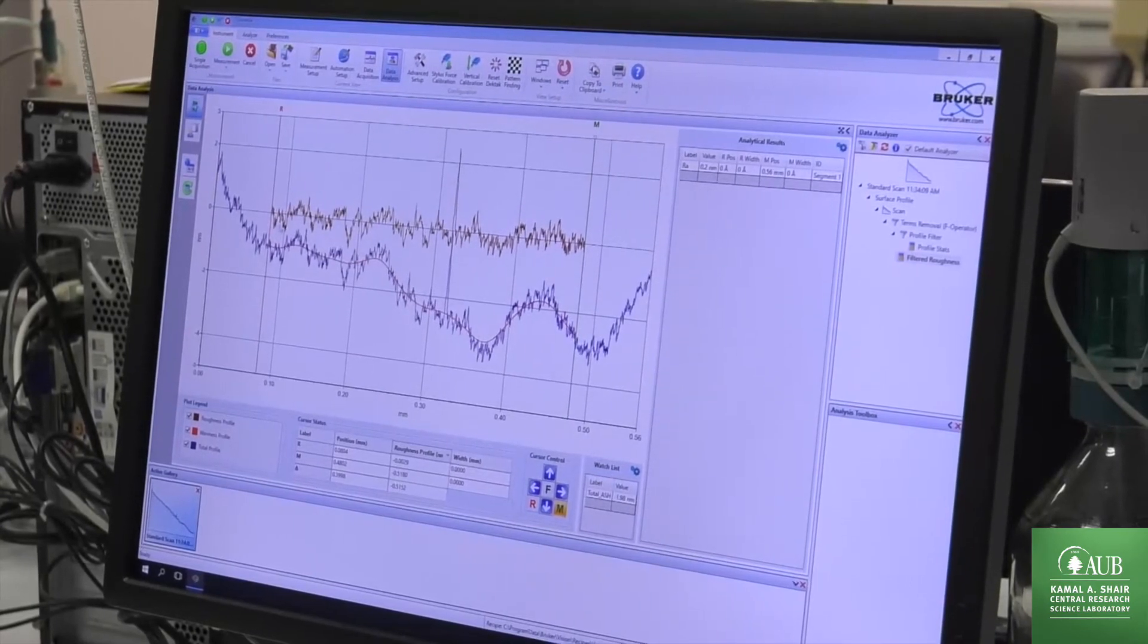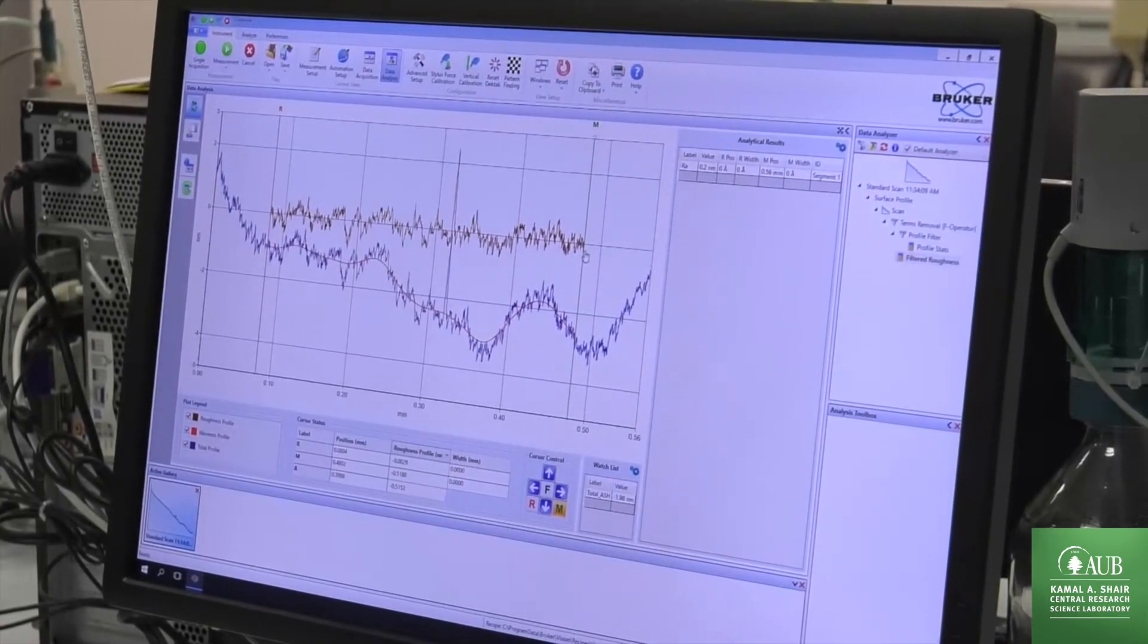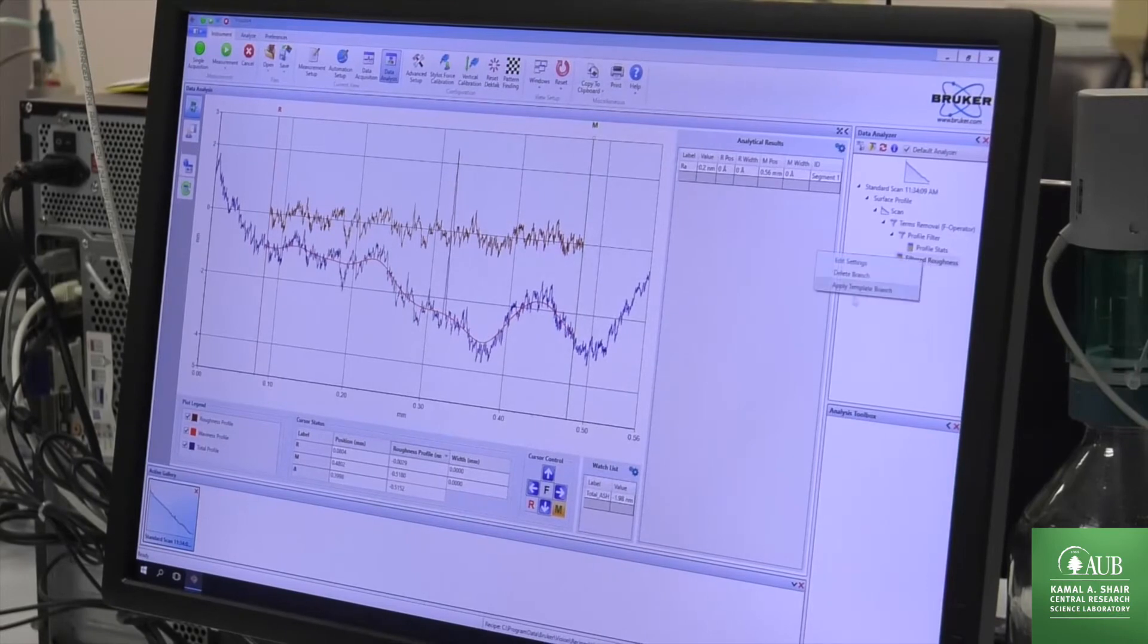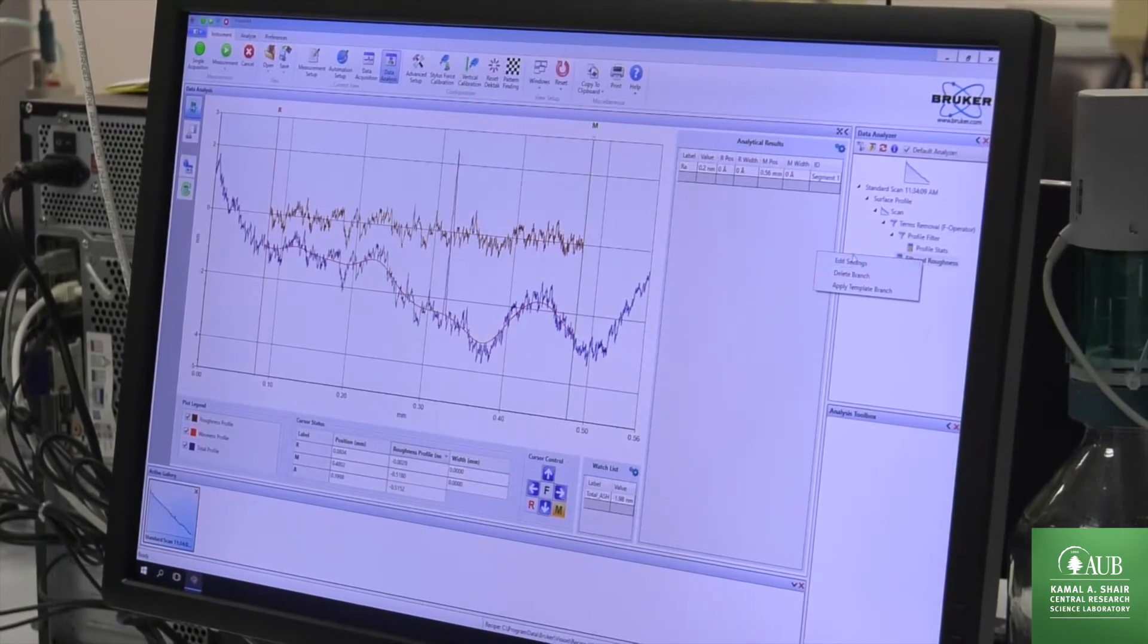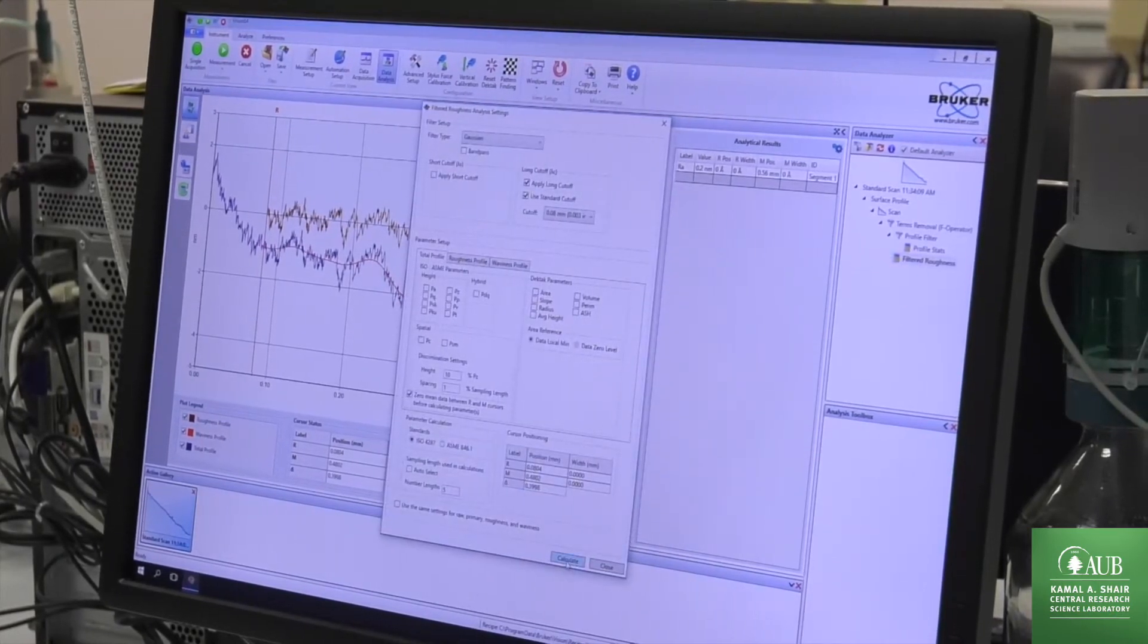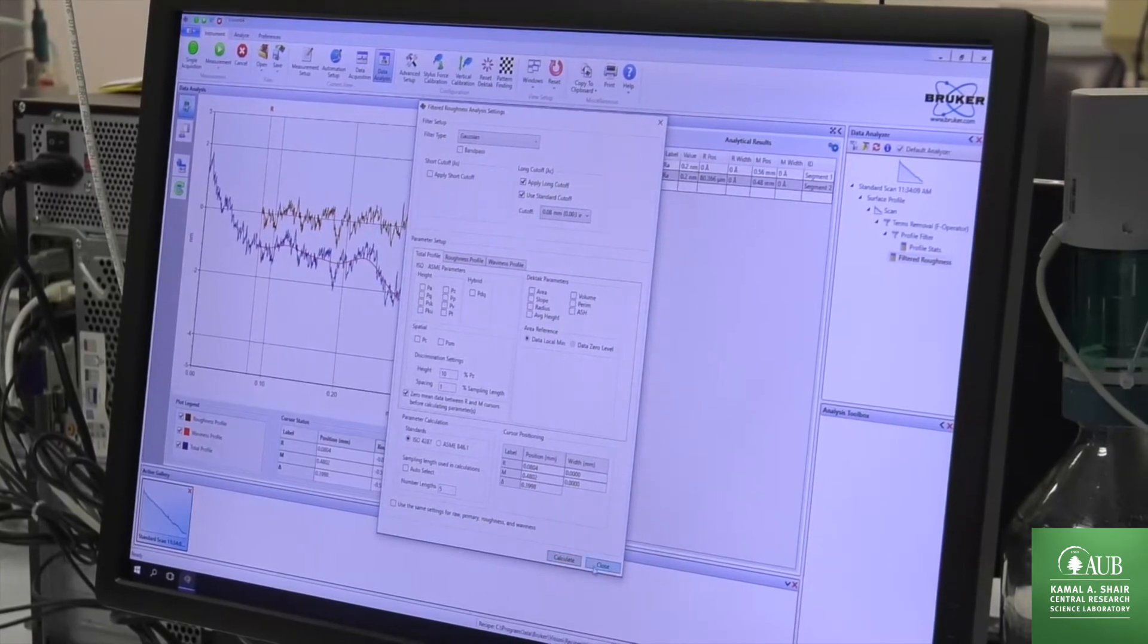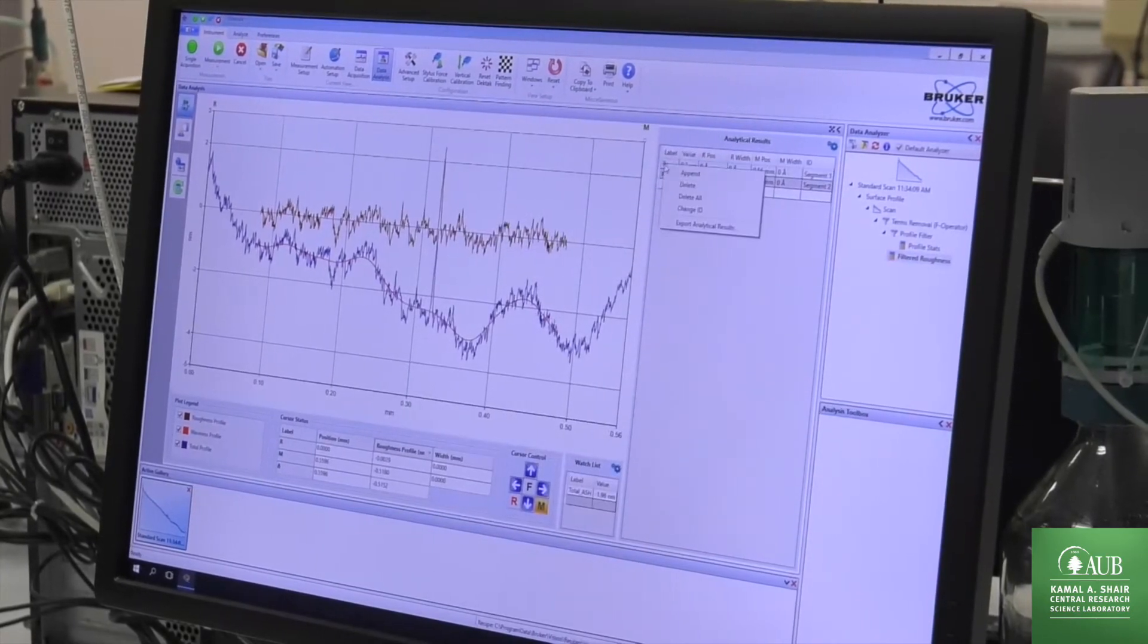That would be at 1 seventh, at 6 sevenths. And then I recalculate the roughness for these cursor positions. Simply click on calculate, close, and I can delete the old settings.